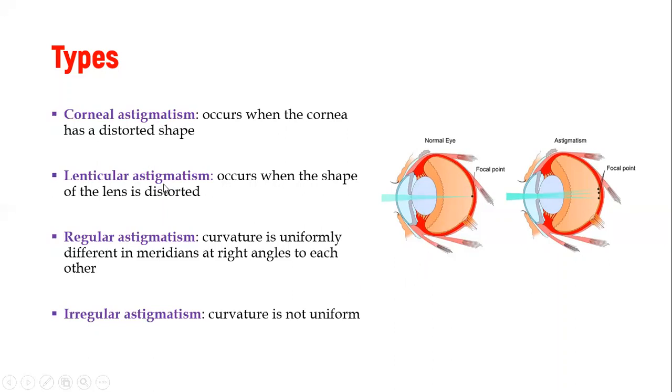Then apart from the two main ones, we can also classify astigmatism as either regular or irregular. And regular is where the curvature is uniformly different in the meridians, especially at the angles to each other. So it is not curved in the smooth way, but it is uneven, but uniformly. Then you have irregular astigmatism, now that is a curvature that is irregularly not uniform. So the curvature is so rugged, and that is what we call now irregular astigmatism.